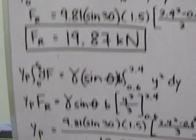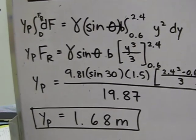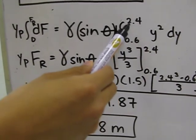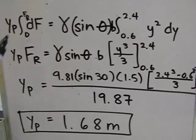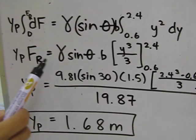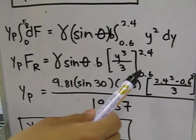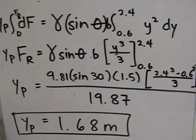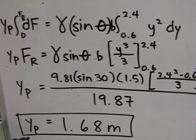For the second part of the problem, which is to find YP, we multiply equation 4 by Y or YP. Maintaining the same limits of integration for both the differential force and differential Y, this will always be the case for this topic. Integrating the equation, we will get 1.68 meters as our YP.